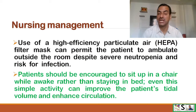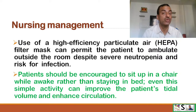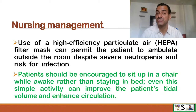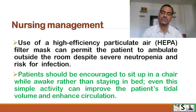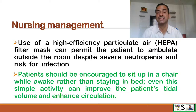Use a high-efficiency particulate air filter (HEPA) mask, which permits the patient to ambulate or walk outside the room despite severe neutropenia and risk for infection. The patient should be encouraged to sit up in a chair while awake rather than staying in bed, as even this simple activity can improve the patient's tidal volume, respiratory status, and enhance blood circulation.